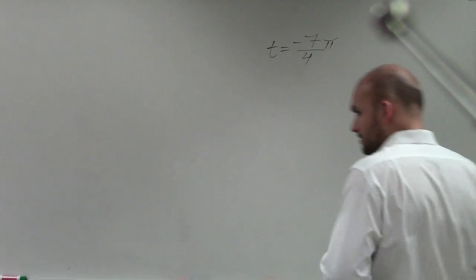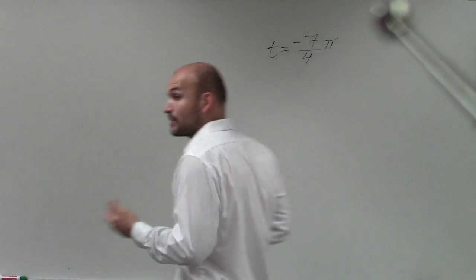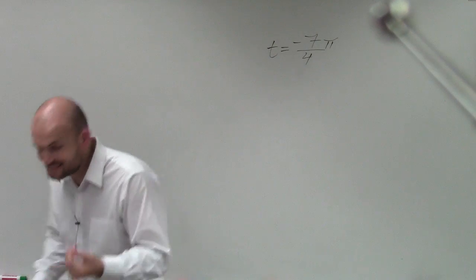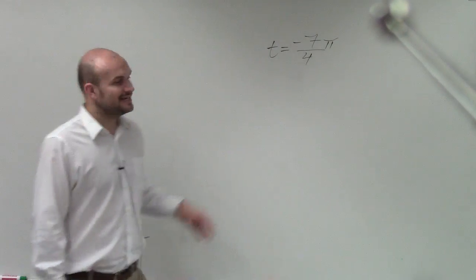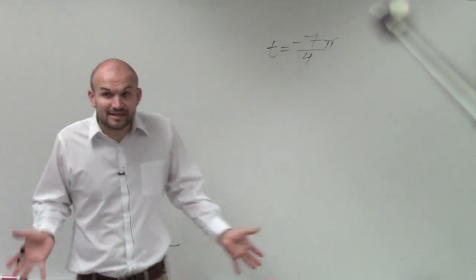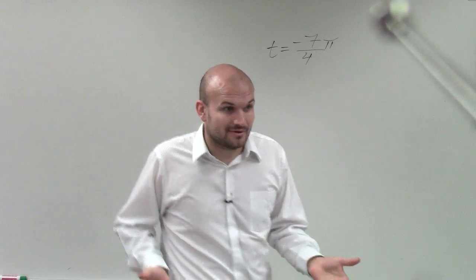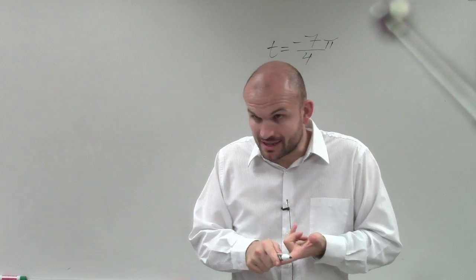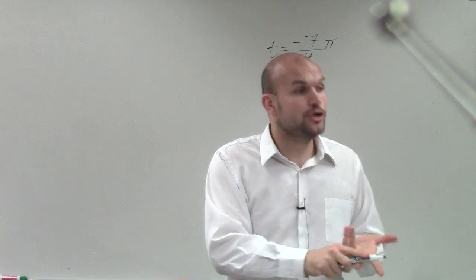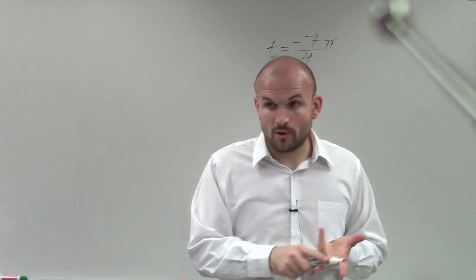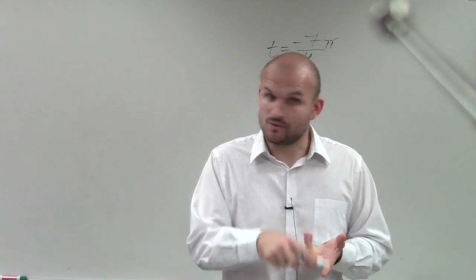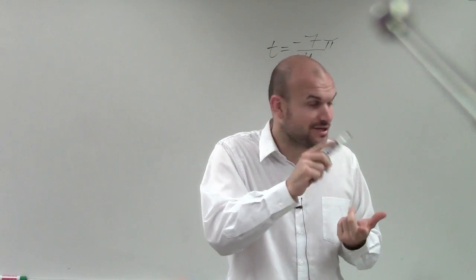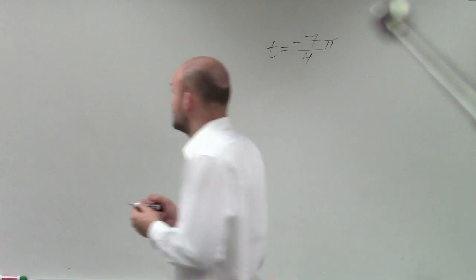For this problem, t equals negative 7π over 4. What we're going to do in this example is the exact same thing we did in the last example. We have to: one, determine where the angle is; two, determine the point. We can't do anything until we determine the angle and determine the point.